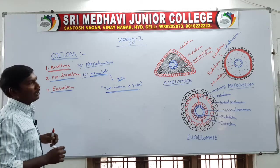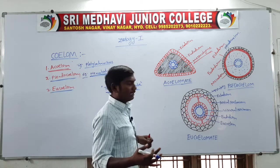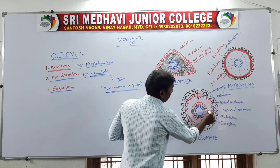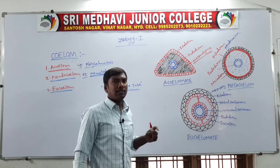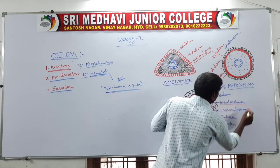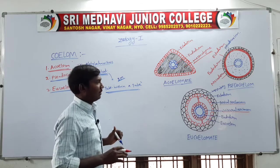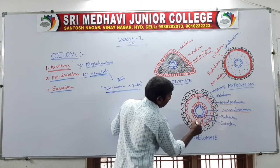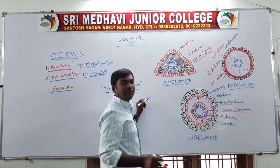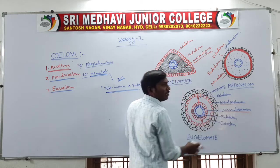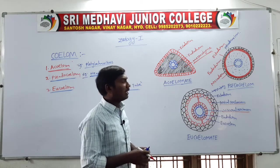The third type is eucoelomate, which is the true coelom. Eucoelomate means these animals have a body cavity, and the body cavity is covered by the mesodermal membranes. The outer membrane is the parietal peritoneum and the inner membrane is the visceral peritoneum. These are called the true coelom or eucoelomate.